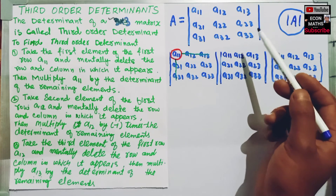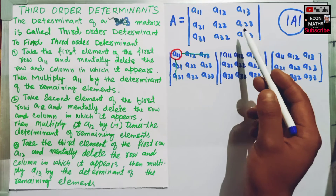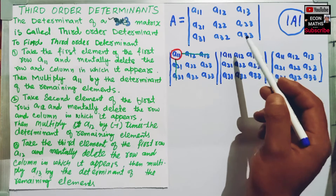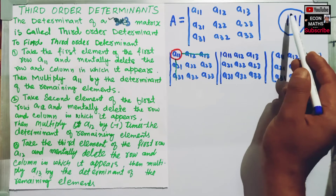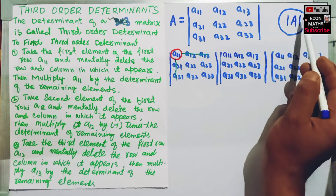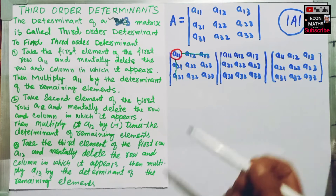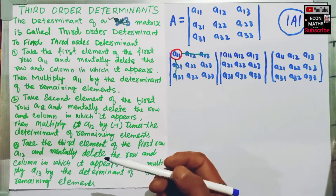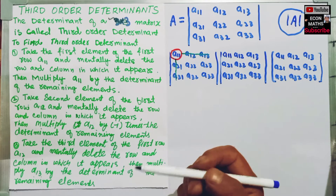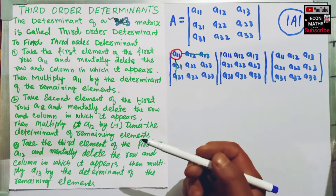The determinant of a 3 by 3 matrix is called the third order determinant. The symbol for the determinant is |A|. There are some steps to find the determinant of a 3 by 3 matrix.